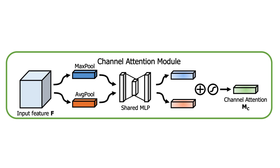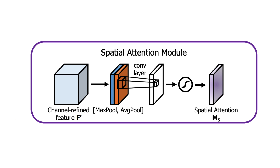The accompanying figure visually represents these attention types. Channel attention aims to enhance feature layers in the feature map that convey more critical information, while dampening the influence of less relevant feature layers. In contrast, the spatial attention network highlights regions of interest in the feature space, effectively masking background regions. These two attention mechanisms — channel and spatial — can be utilized independently or in combination with deep learning methods, allowing the model to selectively attend to both crucial feature layers and specific locations of interest.